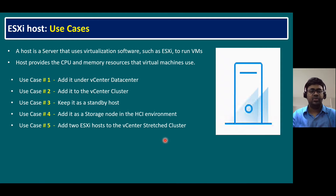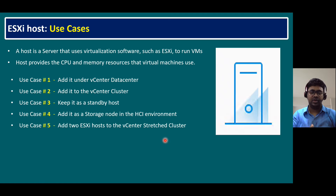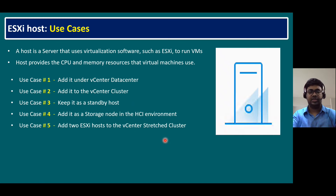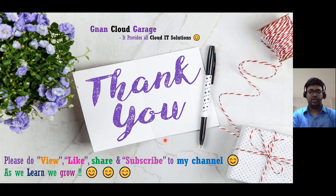Use case five: add ESXi hosts to a vCenter stretched cluster. In a stretched cluster environment, the recommendation is to add one host under Site A's data center cluster and another host under Site B's cluster. When using a stretched cluster, always add hosts equally: if Site A has seven nodes, Site B must also maintain seven nodes. This equal node distribution is a key requirement for stretched clusters.